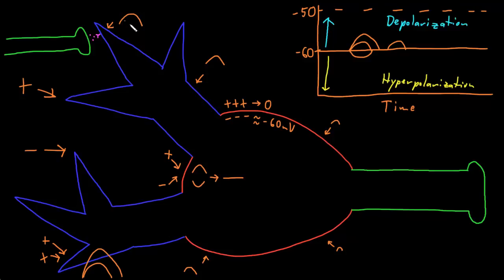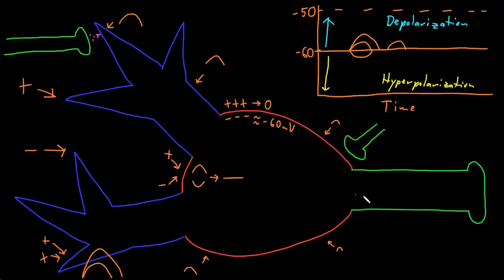One effect of graded membrane potential changes decaying with distance is that the closer an input is to the trigger zone, the greater effect it will have on the likelihood of an action potential being fired. A graded potential starting closer to the trigger zone will decay less by the time it gets there than one starting farther away. Therefore, a synapse closer to the trigger zone will have a greater influence on the behavior of the neuron than one farther away — for example, way out at the end of a dendrite.